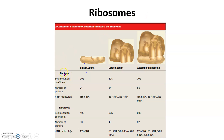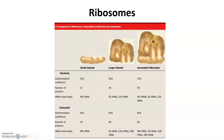The ribosome differs between bacteria and eukaryotes. Both have a small subunit, a large subunit, and then they combine. The small subunit is usually made up of one rRNA molecule and a number of proteins. The large subunit is made up of two rRNA molecules and a number of proteins in bacteria, and three rRNAs and a number of proteins in eukaryotes. They are then all combined into the complete ribosome.